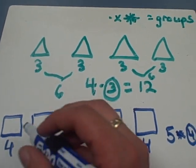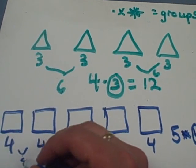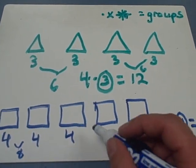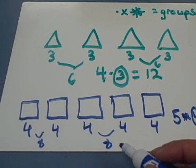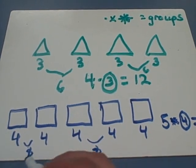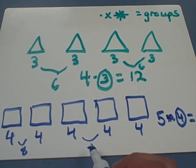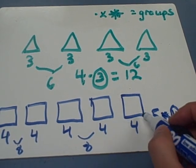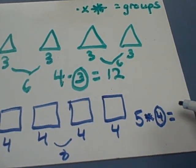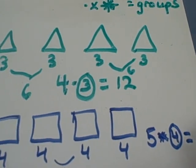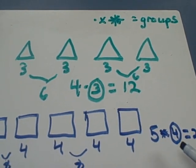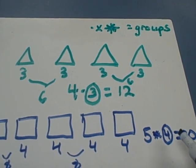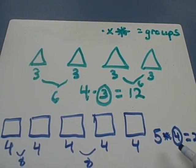Four plus four is eight, and four plus four is eight. Eight plus eight is 16. And 16, 17, 18, 19, 20. Five times four equals 20. So that's another way of writing equations for pictures.